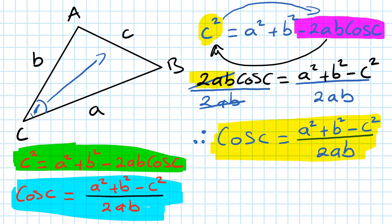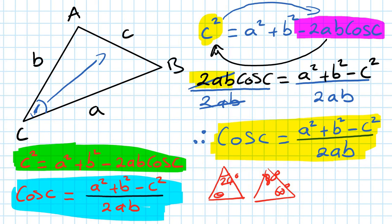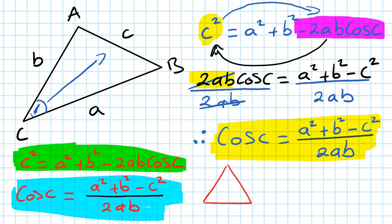Now, the question is: how do I know when to use the cosine rule? To use the sine rule, you need two angles given — for example, 24 degrees and a theta, or 60 and 40 degrees. If you've got two angles, you use the sine rule. For the cosine rule, you only have one angle in a non-right-angle triangle, such as 40 degrees or just theta. One angle given — use cosine rule. Two angles — use sine rule.